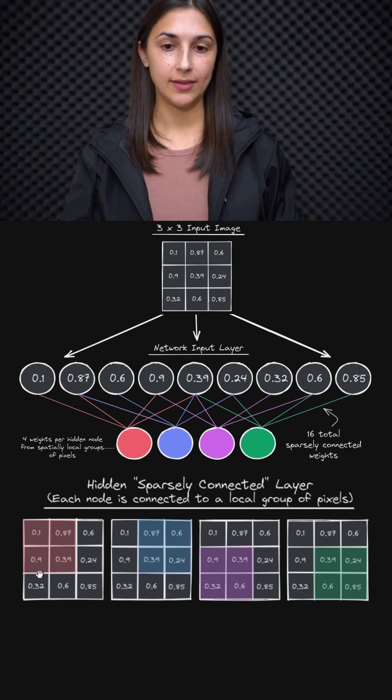So for example, we have this group here in the top left is passed and processed only by this node in the hidden layer. And then we have this group of pixels is only being passed and processed by this node, and then so on for the next two.